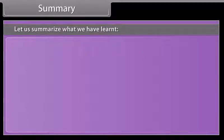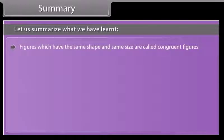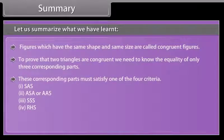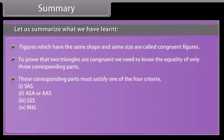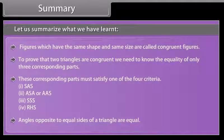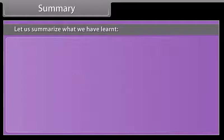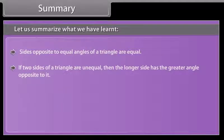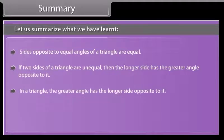Let us summarize what we have learned. Figures which have the same shape and same size are called congruent figures. To prove that two triangles are congruent, we need to know the equality of only three corresponding parts. These corresponding parts must satisfy one of the four criteria: (1) SAS, (2) ASA or AAS, (3) SSS, (4) RHS. Angles opposite to equal sides of a triangle are equal. Sides opposite to equal angles of a triangle are equal. If two sides of a triangle are unequal, then the longer side has the greater angle opposite to it. In a triangle, the greater angle has the longer side opposite to it. The sum of any two sides of a triangle is greater than the third side.